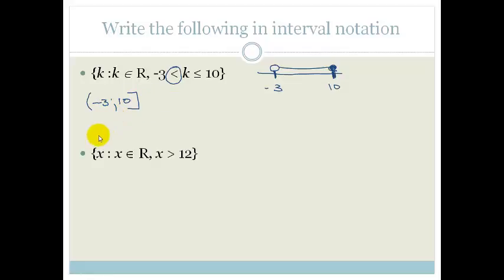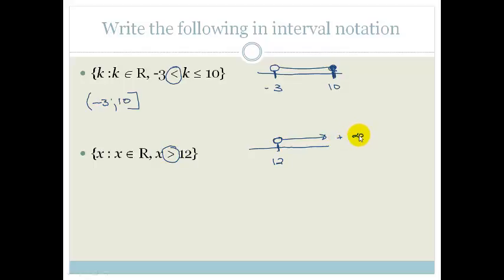Let's look at another example. We have a number line going from 12 — please note, we're not including 12 — all the way up to positive infinity. So this is going to be a curly bracket because we're not including 12. It's 12, and then we're going all the way up to positive infinity. And because you can never get to infinity, it's again a curly bracket.